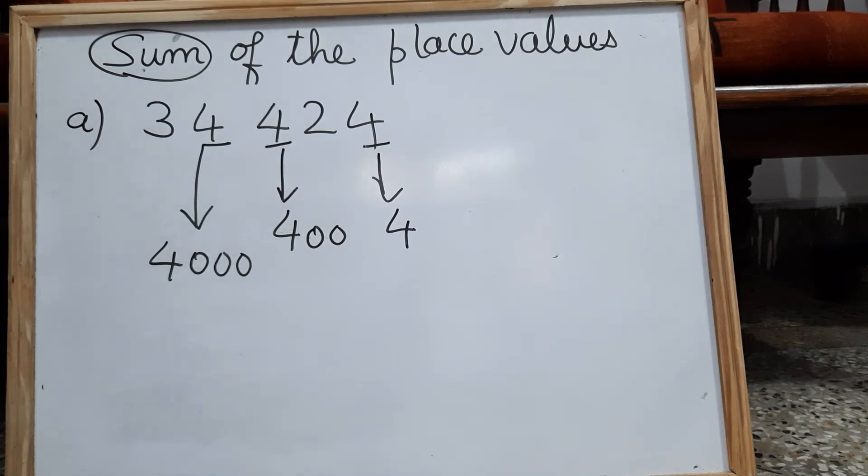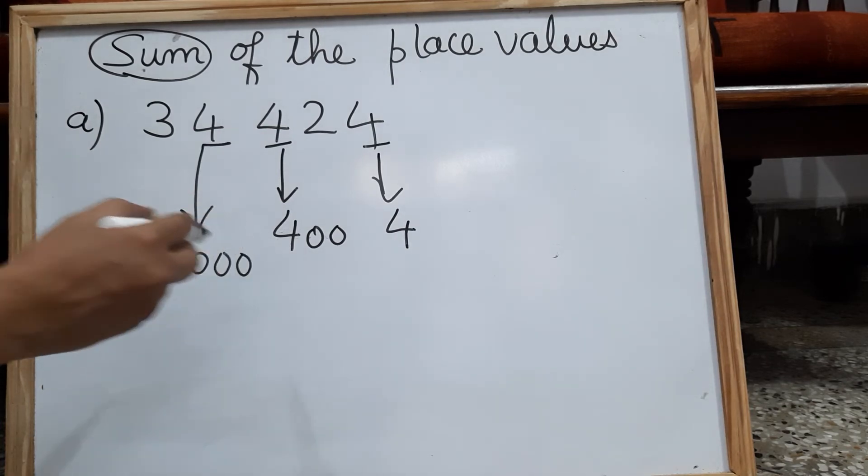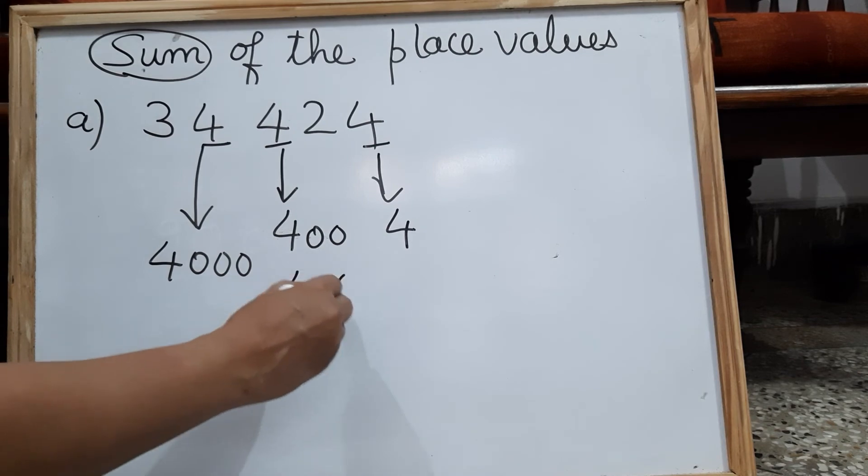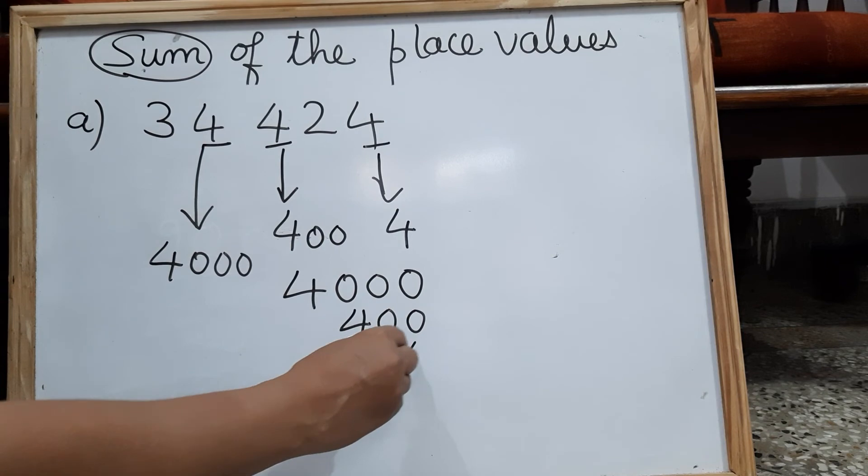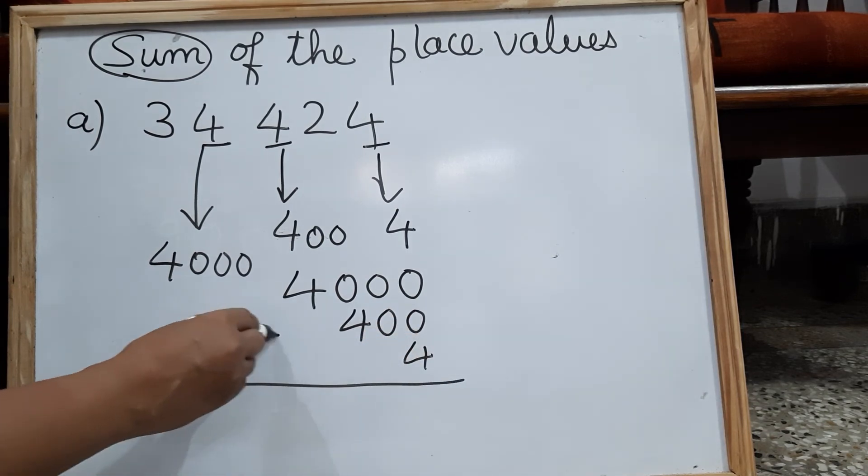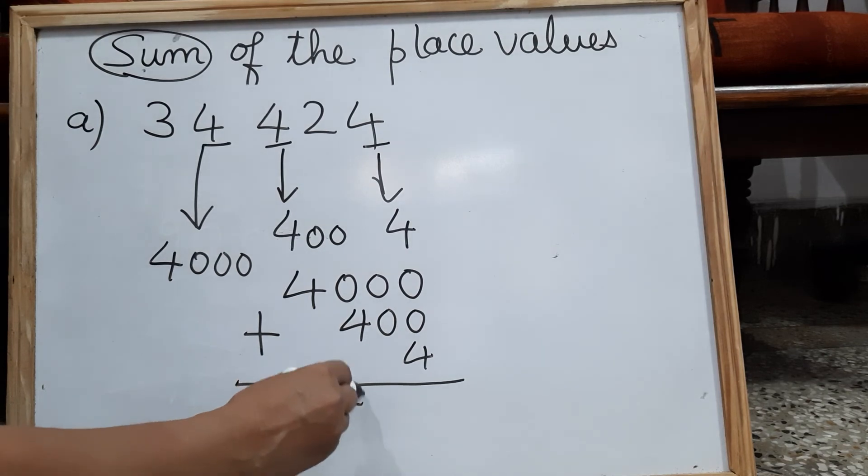Once you have found the place values of the underlined digits, now you have to find the sum. So you have to add it. Add all the place values: 4, 400, 4000 and find the sum. So you get 4404.